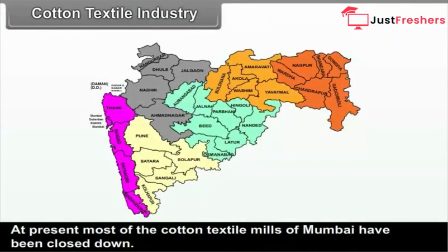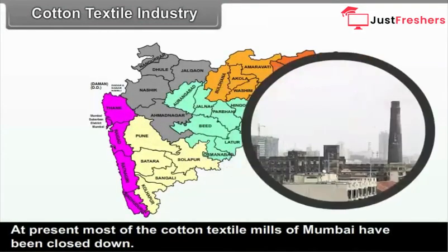At present, most of the cotton textile mills of Mumbai have been closed down. Cotton textile industry includes activities like processing of raw cotton, spinning, weaving, designing, etc.